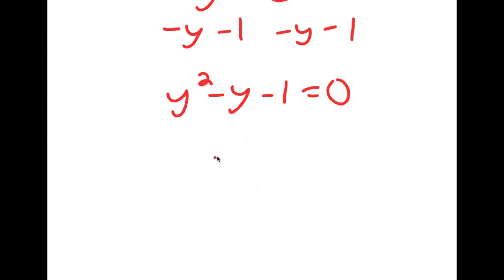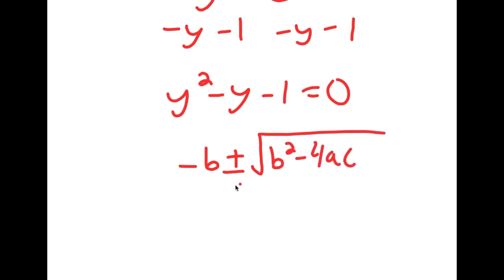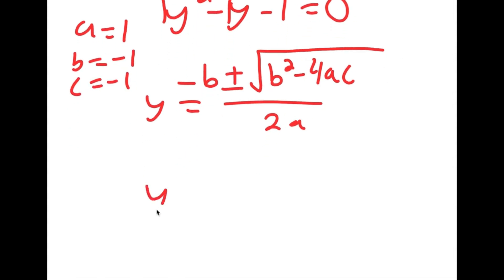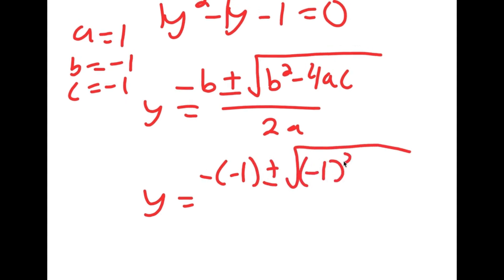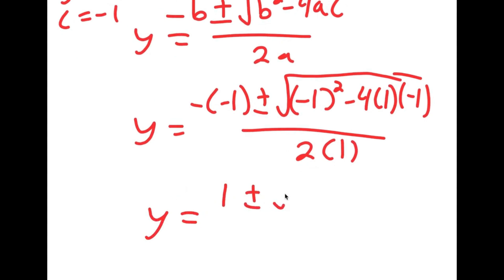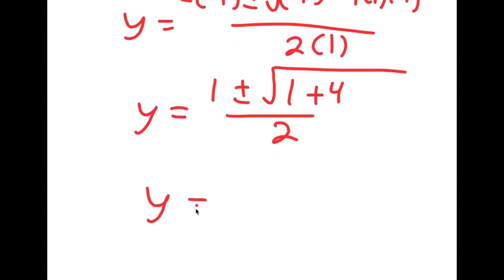I get a quadratic equation, and to solve this I'm going to use the quadratic formula: negative b plus or minus the square root of b squared minus 4ac, all over 2a. In this case a is 1, b is negative 1, and c is negative 1. So I get y is equal to negative of negative 1, plus or minus the square root of negative 1 squared minus 4 times 1 times negative 1, all over 2 times 1. This equals 1 plus or minus the square root of 1 plus 4, all over 2, which is 1 plus or minus the square root of 5, over 2.